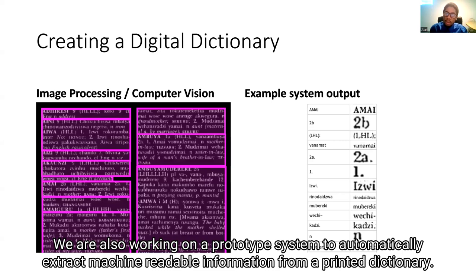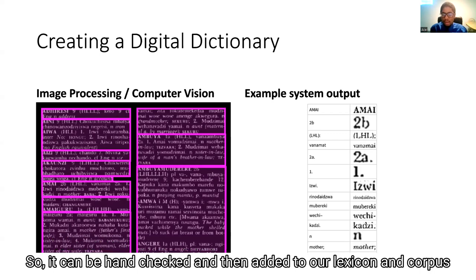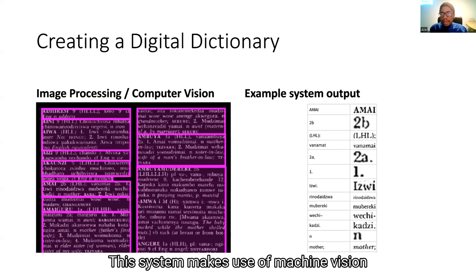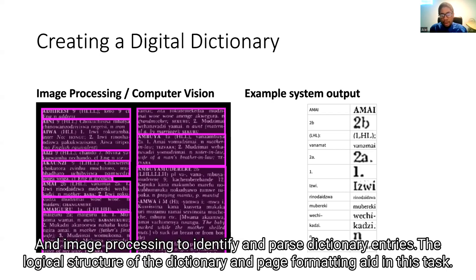We are also working on a prototype system to automatically extract machine-readable information from a printed dictionary, so it can be hand-checked and then added to a lexicon and corpus. This system makes use of machine vision and image processing to identify and parse dictionary entries, exploiting the logical structure of the dictionary and page formatting.